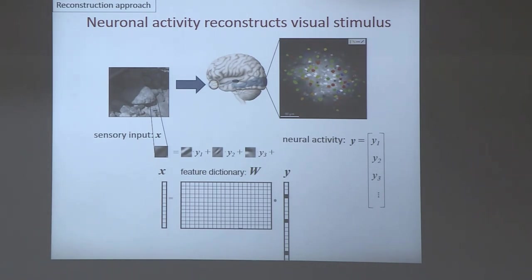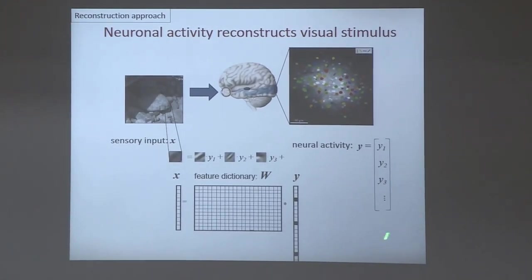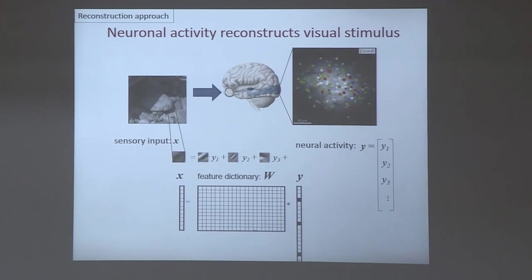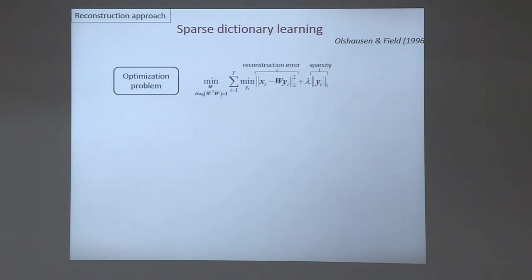This is the central tenet of the reconstruction approach, and there have been many theories — generally under the name of efficient coding — that use this approach to make important predictions about biology. Some have been very successful, but perhaps the pinnacle of this approach is sparse dictionary learning proposed by Olshausen and Field twenty years ago. They suggested a biologically plausible mechanism to not just extract the neuronal activity vector, but also learn the feature dictionary.